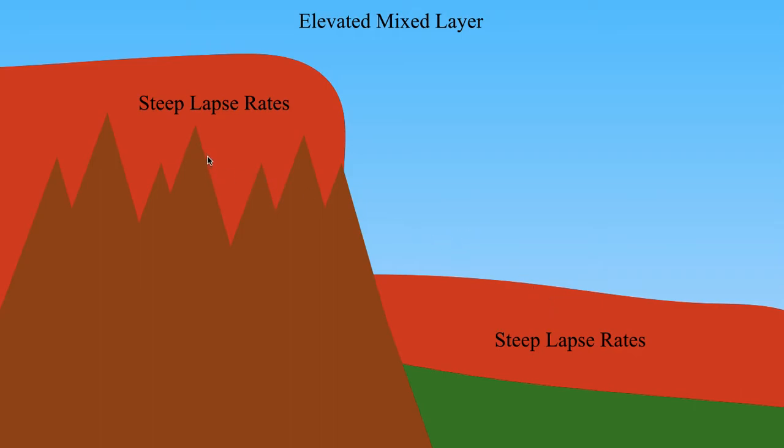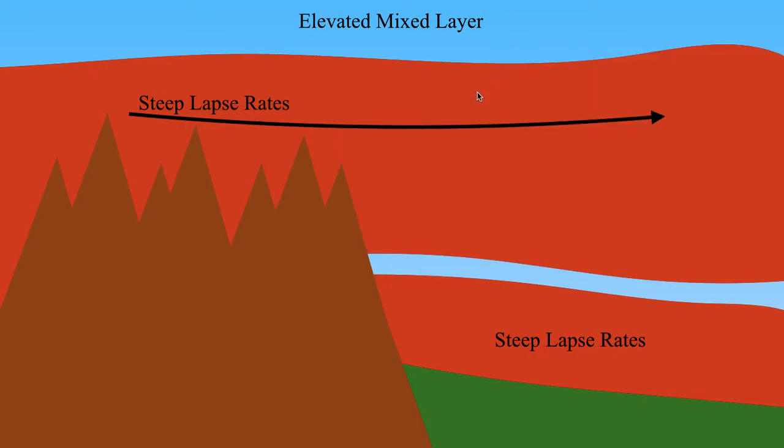Ideally, on a nice severe weather setup, you're going to have a strong west or southwesterly wind that's going to blow this air, take this air on top of the Rockies, and bring it out over the plains. So you're going to take all the steep lapse rates that are on top of the mountains and bring them out over the plains, and that's going to give you a profile that looks like this.